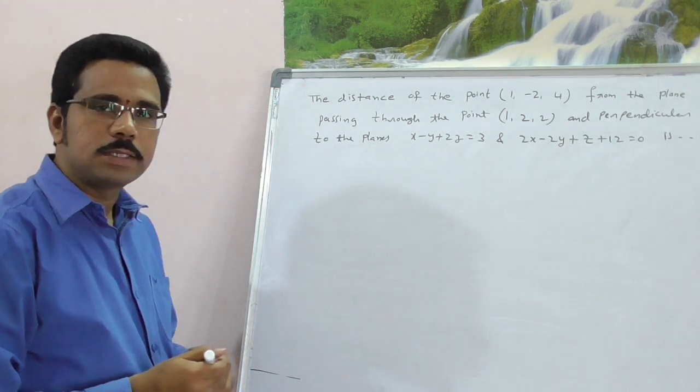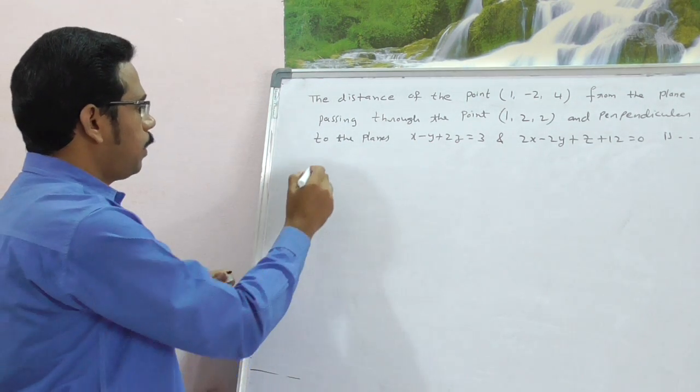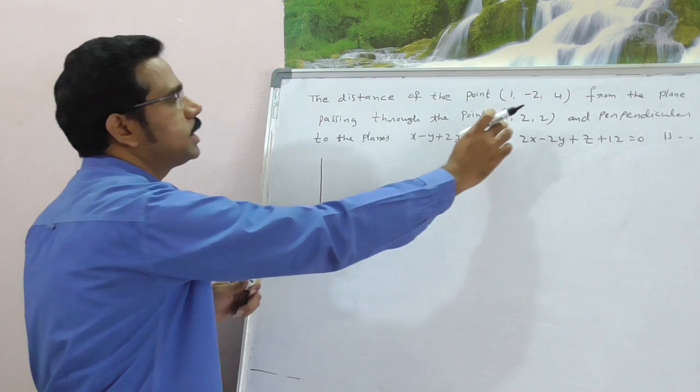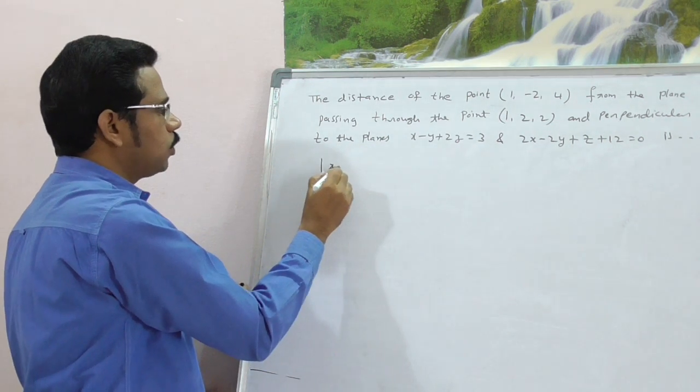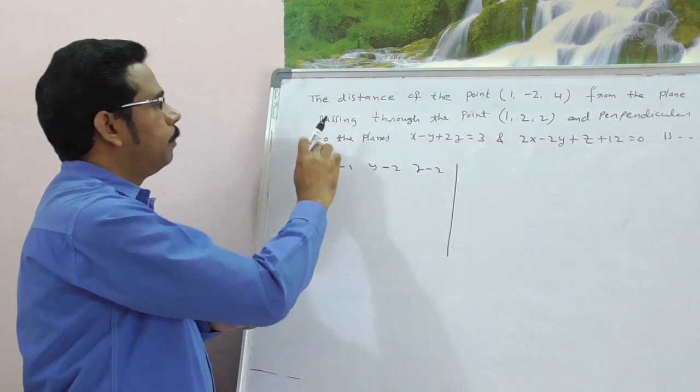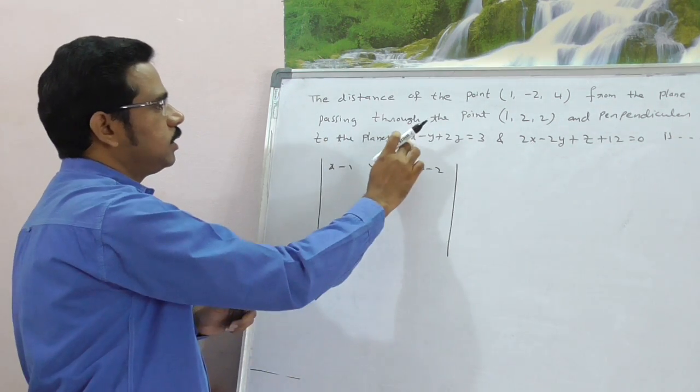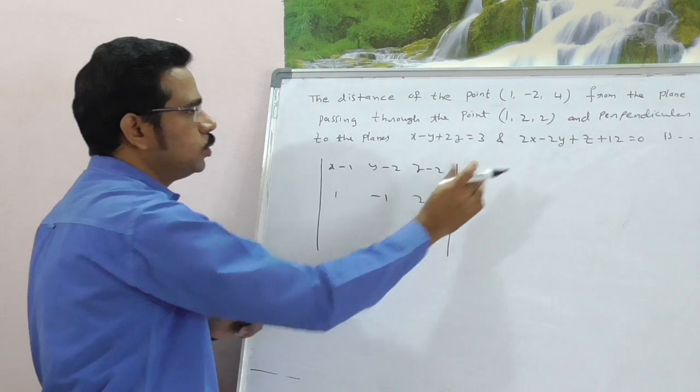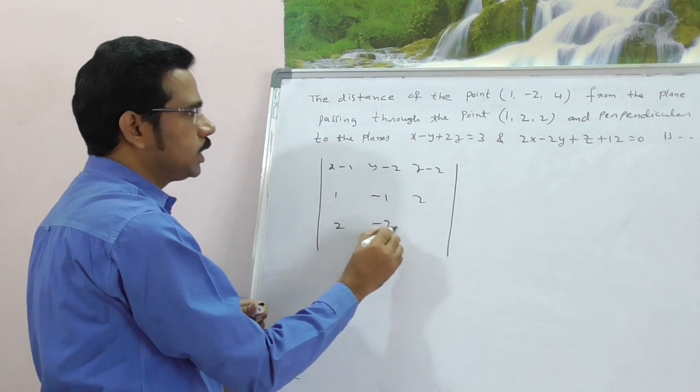Simply apply three-dimensional plane's concept. Here it is. The required plane should be the plane passing through (1, 2, 2), therefore first row X-1, Y-2, Z-2. Perpendicular to the plane, write direction ratios of first line, that is 1, 1, 2, here it is 2, -2 and 1.